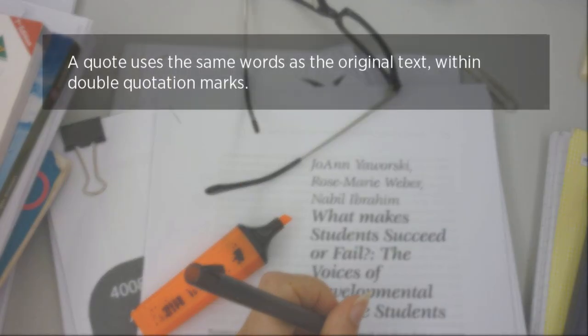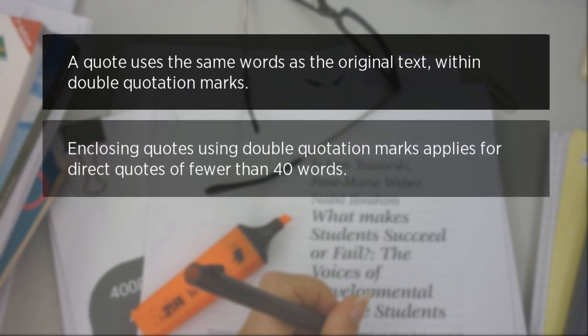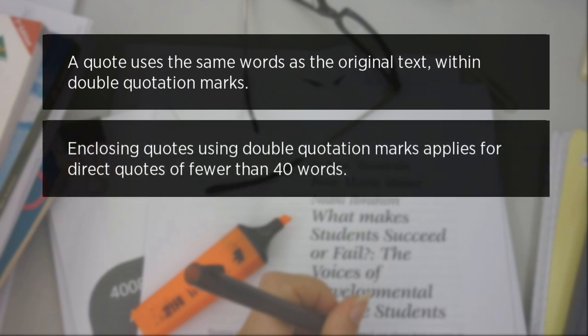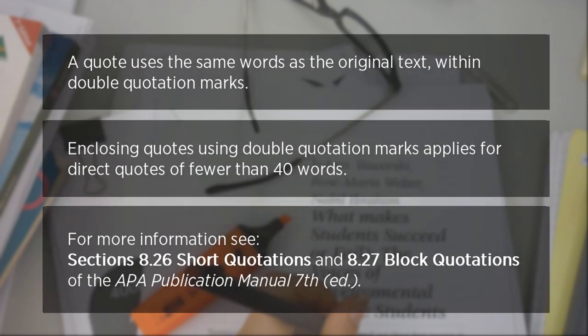A quote uses the same words as the original text within double quotation marks. This applies for direct quotes of fewer than 40 words. For more information, see sections 8.26, 'Short quotations,' and 8.27, 'Block quotations,' of the APA Publication Manual 7th edition.